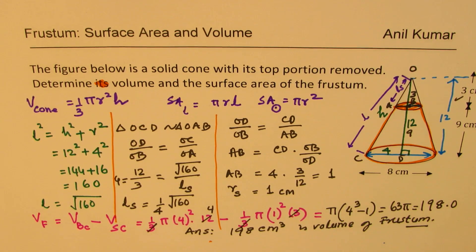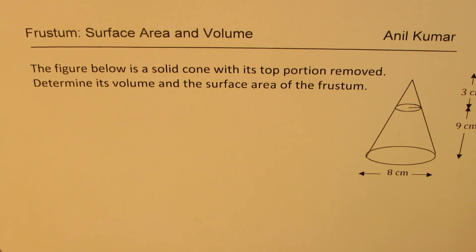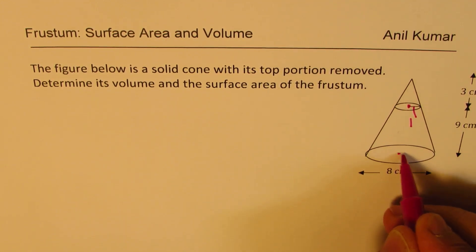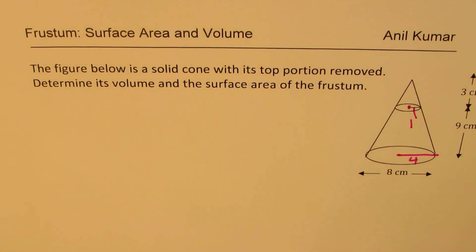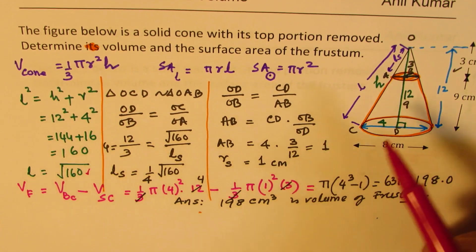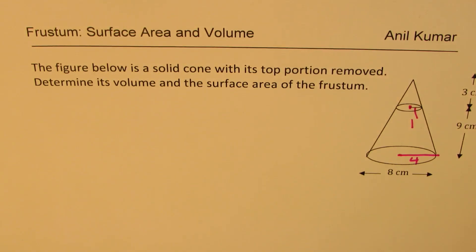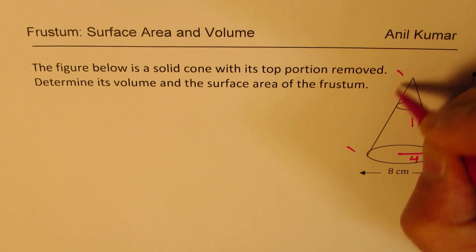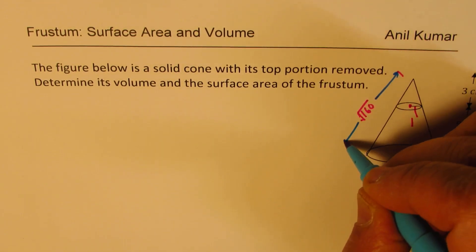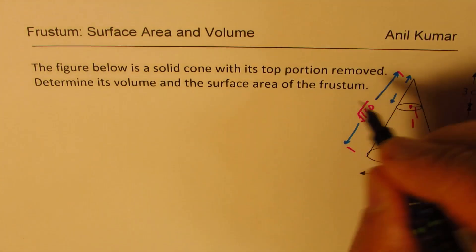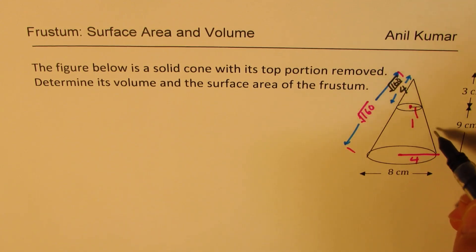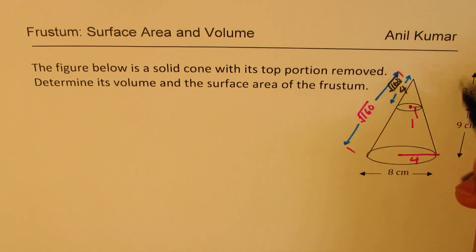On the next page, we'll find the surface area. To find it, we need the lateral lengths. The small radius is 1, the large radius is 4, the large lateral length L is the square root of 160, and the small lateral length Ls is one-fourth of the square root of 160, since the ratio of heights is 3 to 12, which is one-fourth.